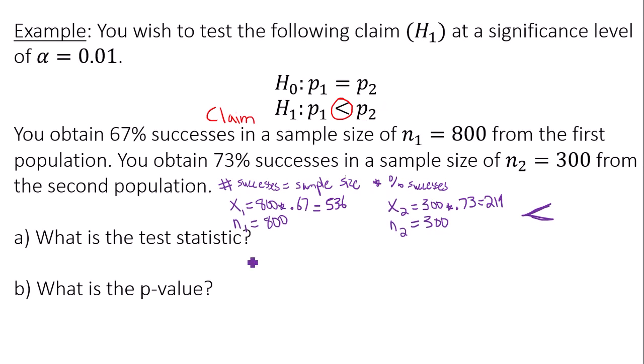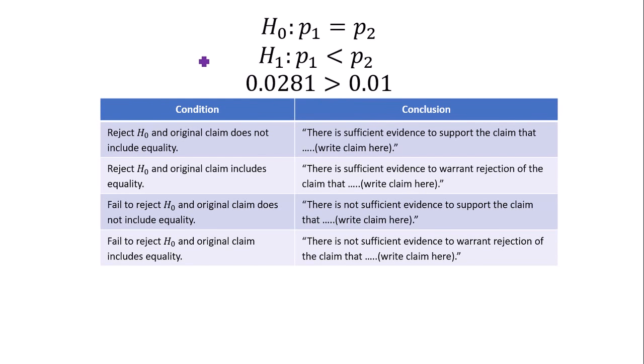So the test statistic would be negative 1.91. The p-value will be 0.0281. Now let's compare the p-value to alpha, which is 0.01 in this case. Keep in mind your claim was the alternative hypothesis here.